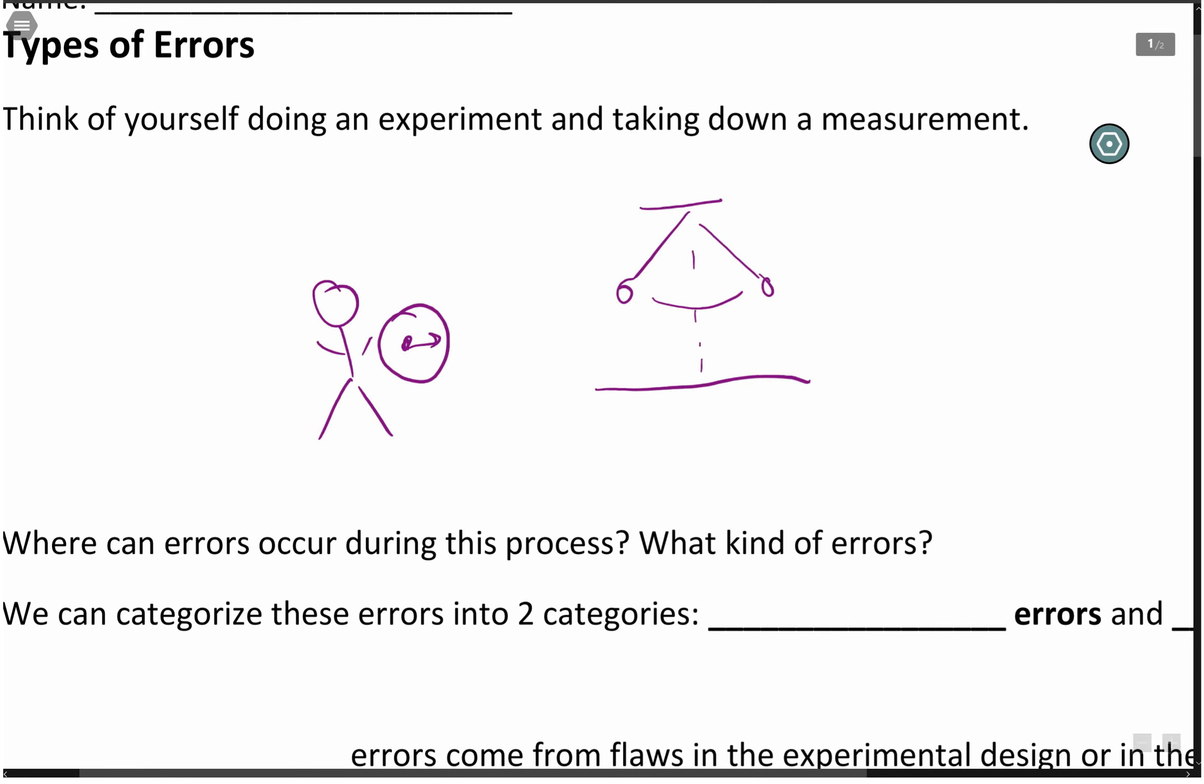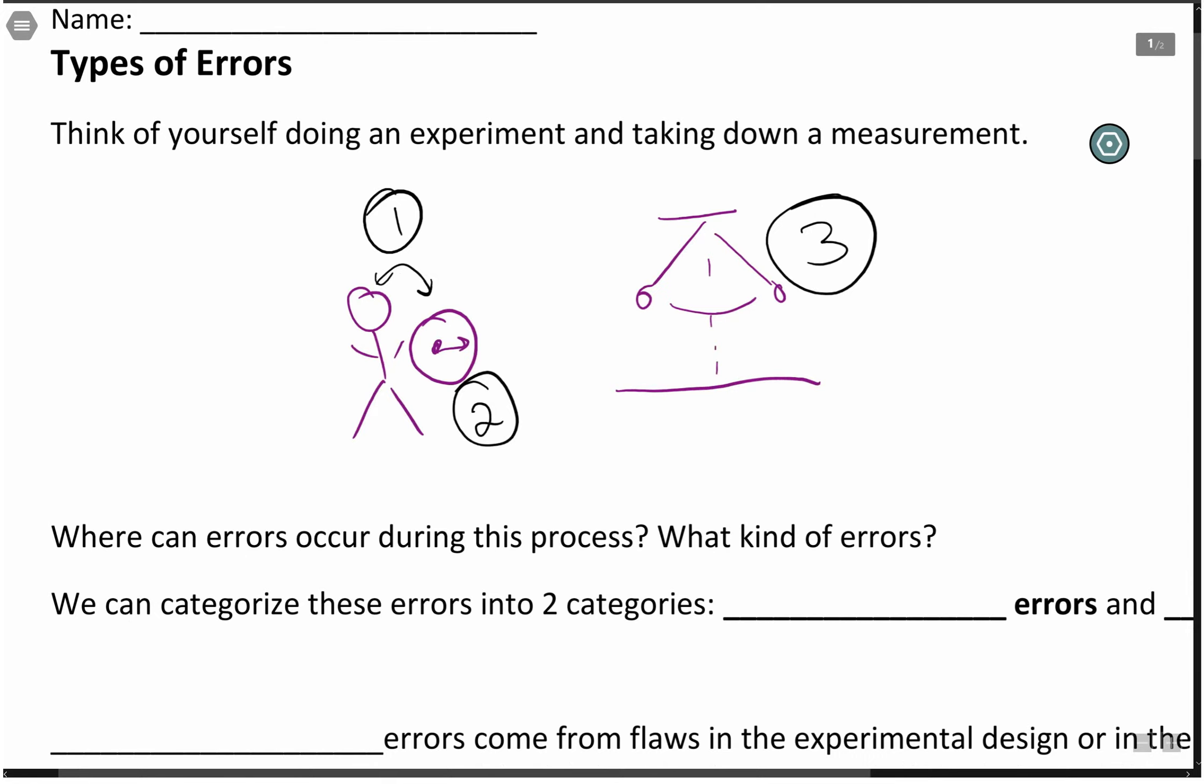There are three places where errors can occur. It can occur between you and the measuring instrument itself. Number one, errors can occur with your instrument of measurement. So for example, your instrument not being precise or properly calibrated. And last but not least, errors that are associated with your setup, your equipment setup. Three places where these errors can occur.